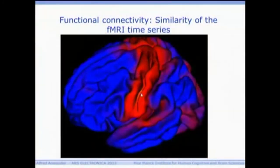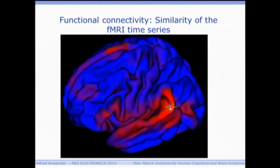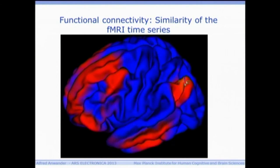So let's single out such a spot — the red ball, which I can move. Now, to what extent are other spots synchronized with that red spot? In the posterior lobe, there is a strong synchronization with the front, but not with the middle part. So there are networks that communicate actively and others that are independent of each other.